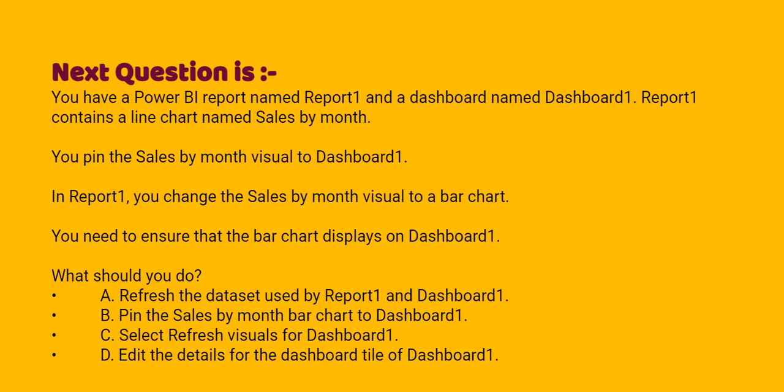What should you do? Option A: refresh the data set used by Report1 to Dashboard1. Option B: pin the Sales by Month bar chart to Dashboard1. Option C: select Refresh visual to Dashboard1. Option D: edit the details for the dashboard tile of Dashboard1.